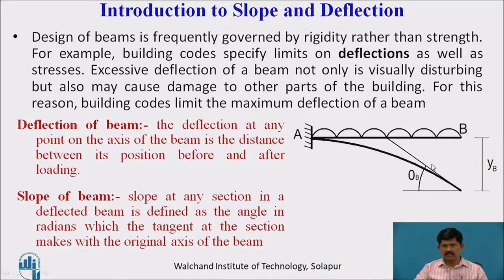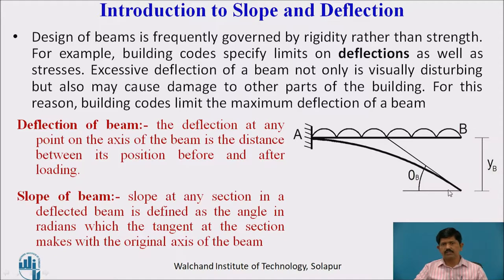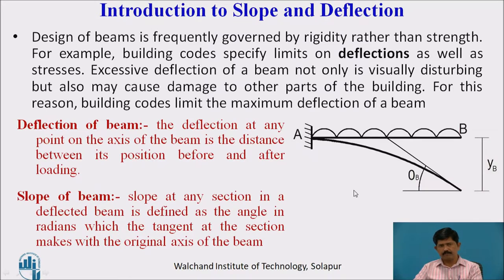This is the deflected shape of the beam. Here a tangent line is drawn to this deflected shape, and again a horizontal line which shows the initial position of the beam. This angle theta is the slope of the beam.